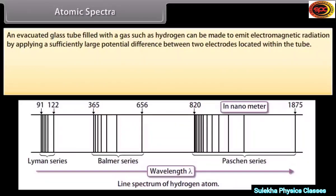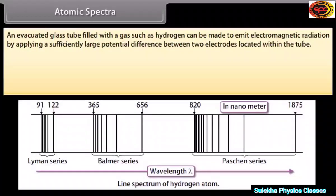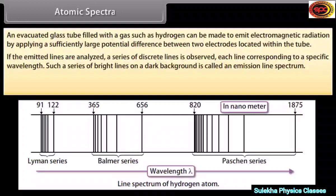Atomic spectra: An evacuated glass tube filled with a gas such as hydrogen can be made to emit electromagnetic radiation by applying a sufficiently large potential difference between two electrodes. If the emitted light is analyzed, a series of discrete lines are observed, each corresponding to a specific wavelength. Such a series of bright lines on a dark background is called an emission line spectrum.